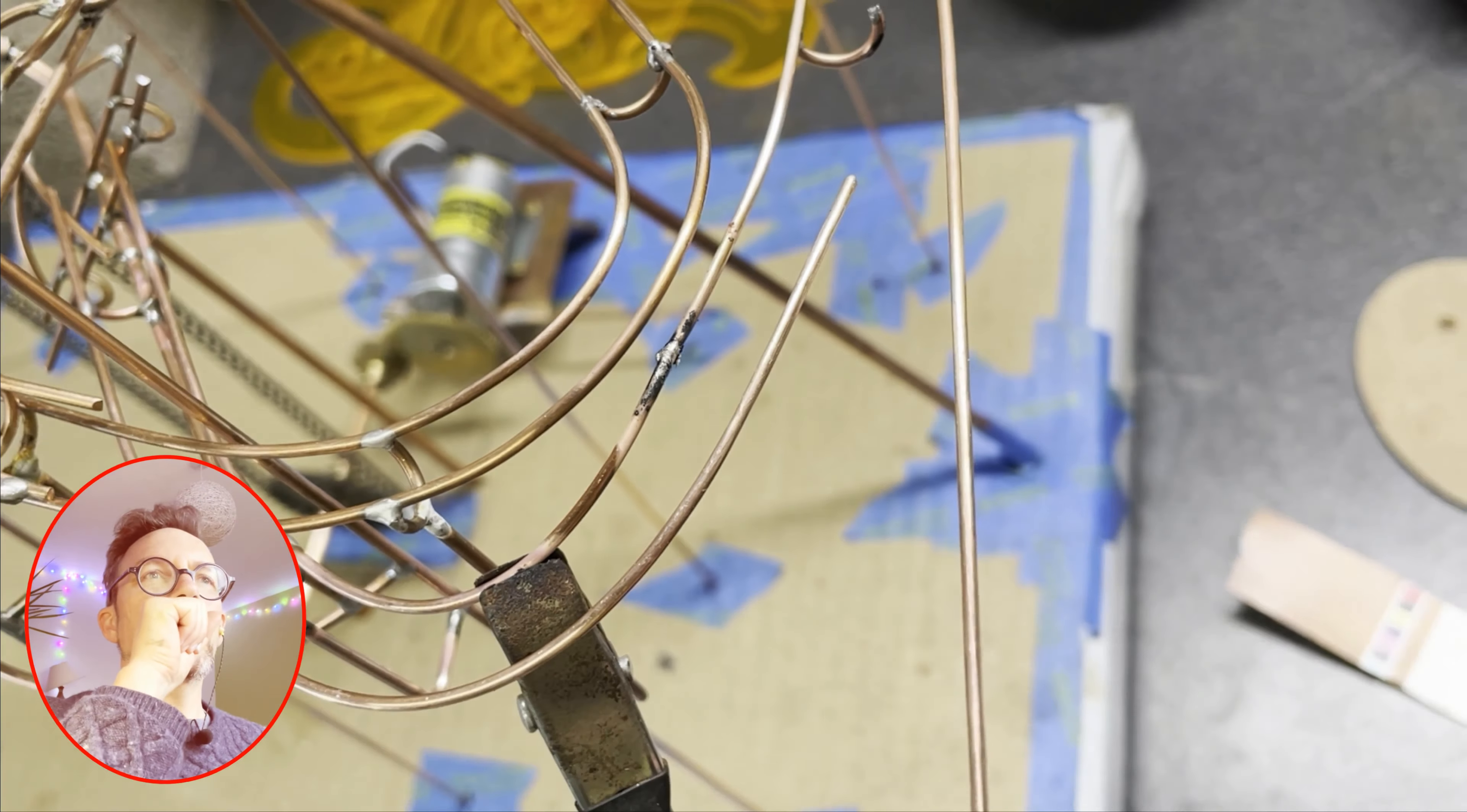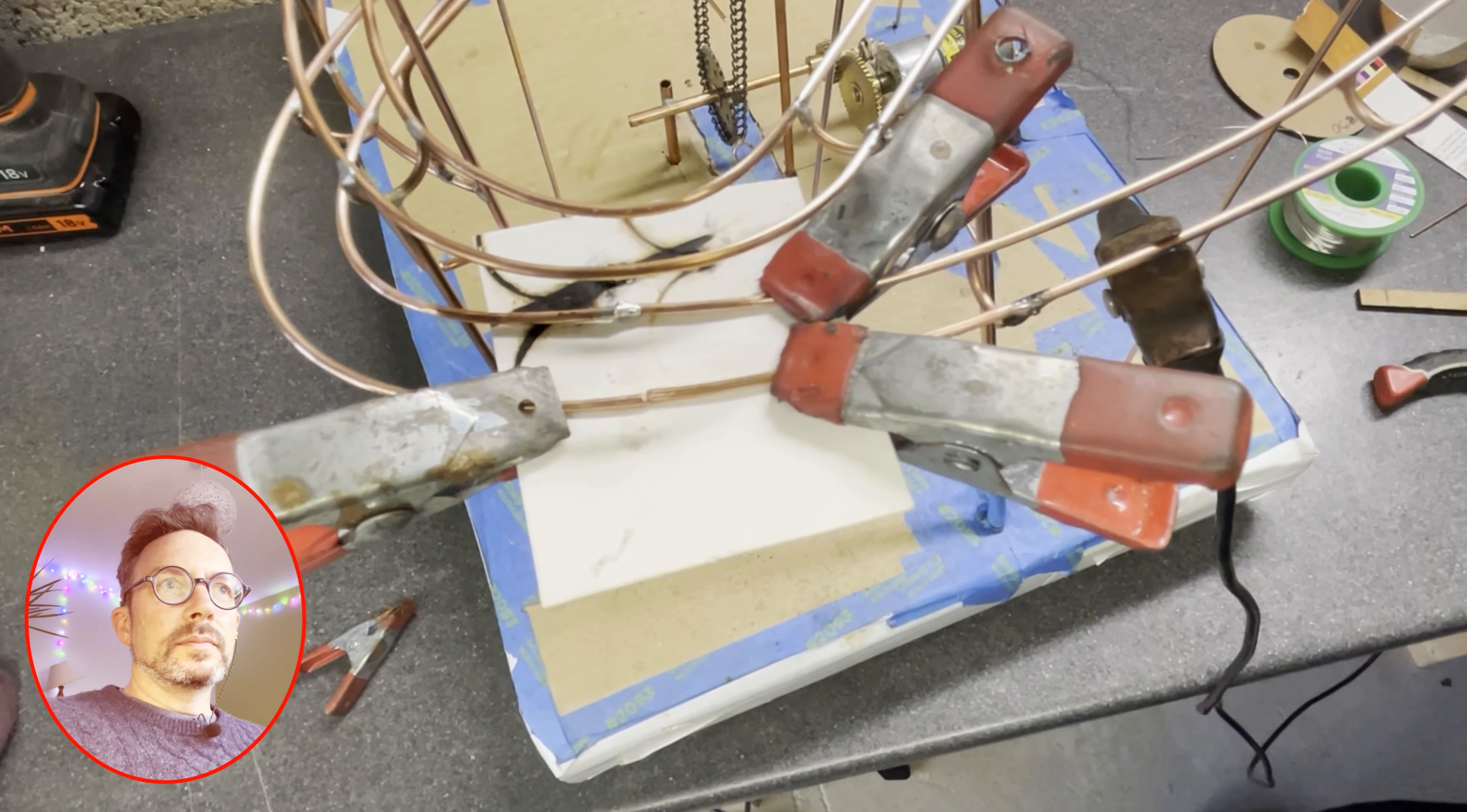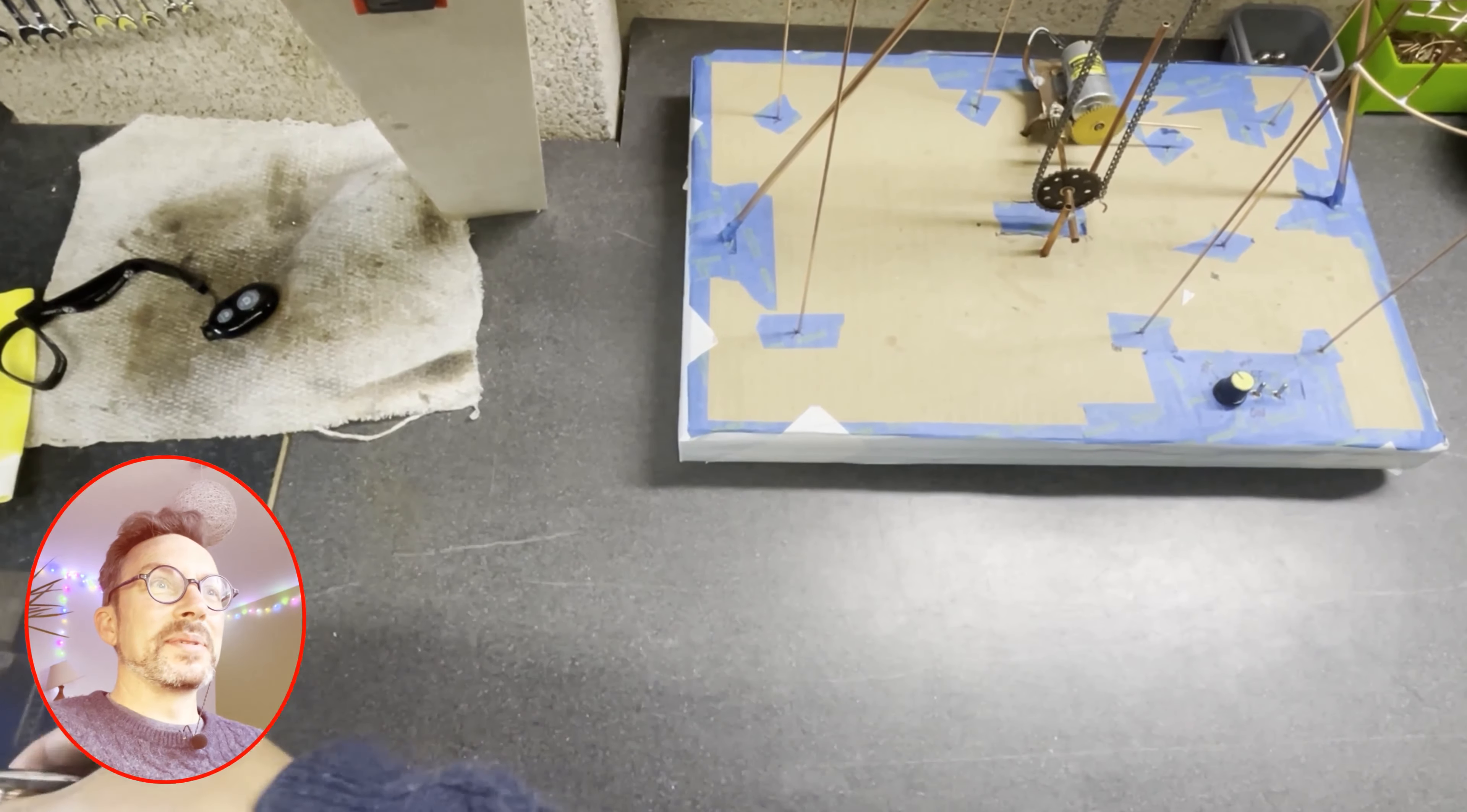And the other one. Bend that round. Cut it in line. I think it's called a butt joint. Bit of heat. Bit of solder. That one worked really well.